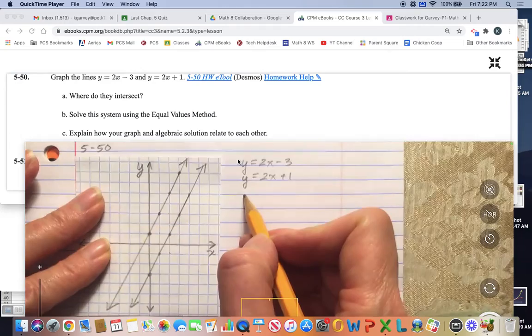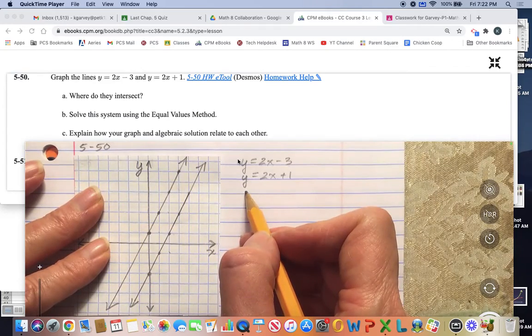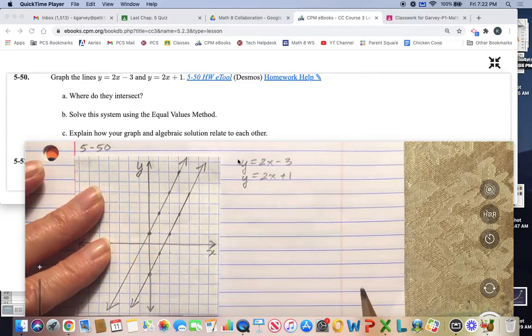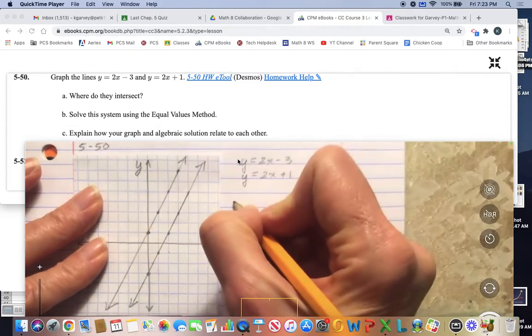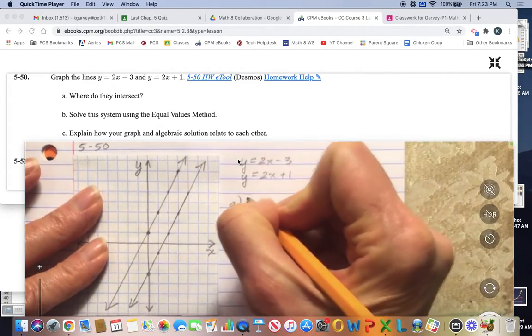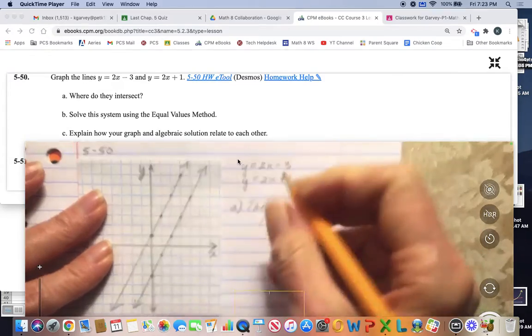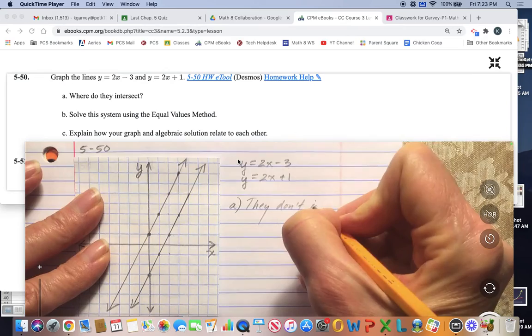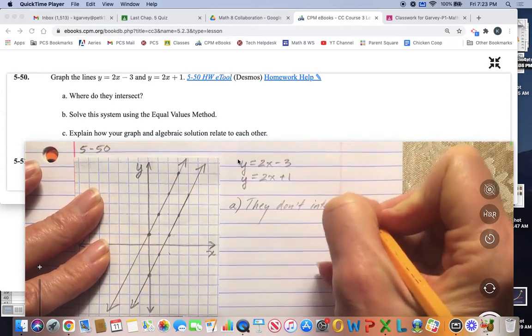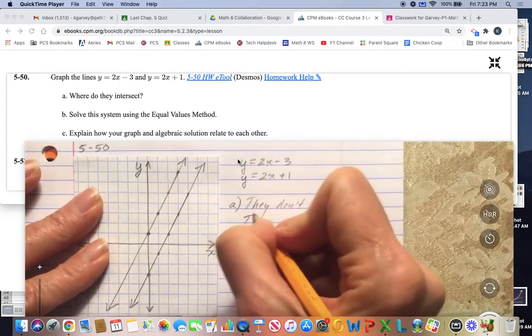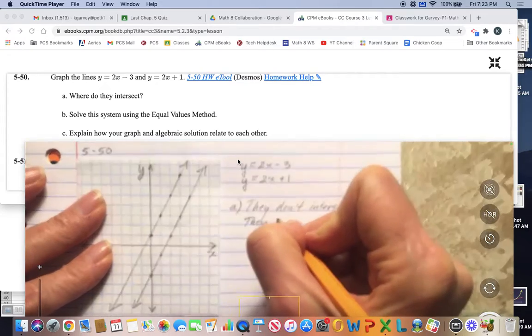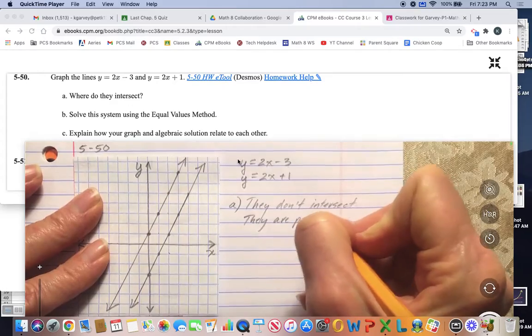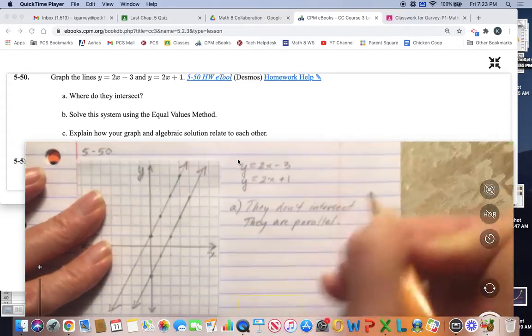So that is what we're going to put for the answer to A, which is, where do they intersect? Well, they don't. They don't intersect. They are parallel. Okay, they're parallel.